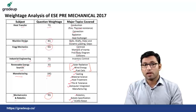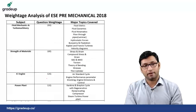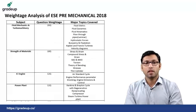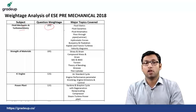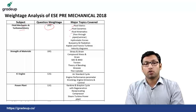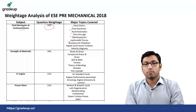Now let's see the weightage analysis of ESE prelims mechanical 2018. In 2018, from fluid mechanics and turbo machinery there were totaled 20 questions from the topics of fluid statics, dynamics, kinematics, flow through pipes, laminar flow, hydrostatic forces, buoyancy and flotation, Kaplan and Francis turbine and velocity diagram.